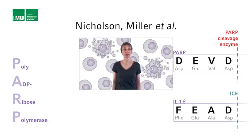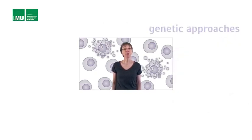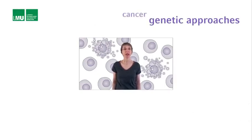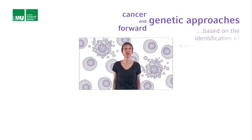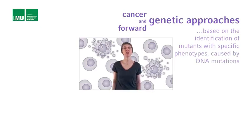The team around Donald Nicholson and Douglas Miller therefore decided to identify this PARP cleavage enzyme using a biochemical approach. So far, we have mainly talked about genetic approaches: the cancer genetic approach using follicular lymphoma as a model that led to the identification of BCL2, and the forward genetic approach using C. elegans as a model that led to the identification of EGL1, CED-9, CED-4, and CED-3. These classical genetic approaches are based on the identification of mutants with specific phenotypes, which are caused by changes in the DNA, by mutations.